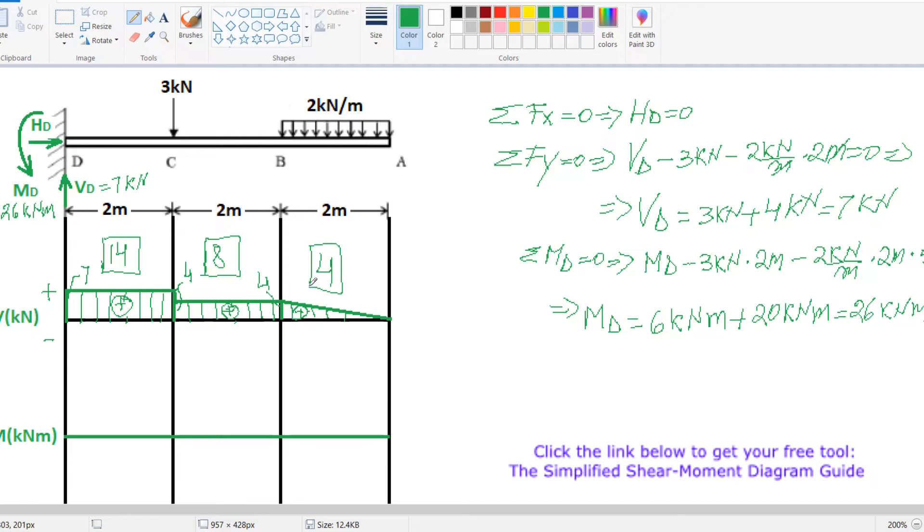One important thing to remember when you have a cantilevered beam: if your moment is clockwise you're going to start on the positive side. If your moment is counterclockwise you start at the negative side. My moment is counterclockwise, which means I will draw my diagram on the negative side, with a 26 kN moment.